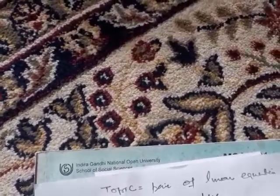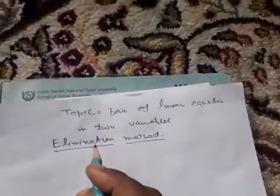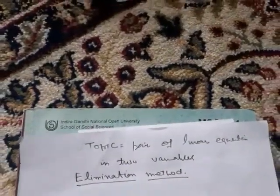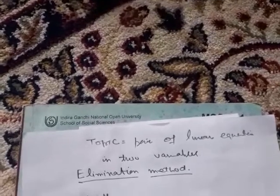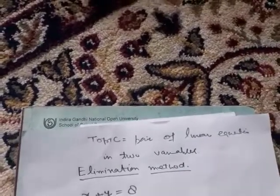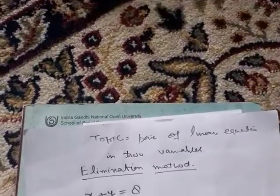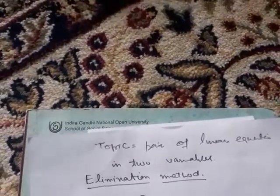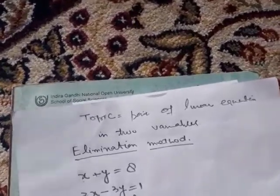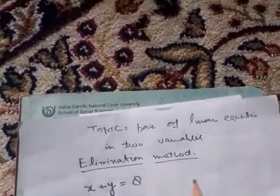Elimination means to eliminate. There are two equations, for example: x plus y equals 8, and 2x minus 3y equals 1. There are two variables, x and y.